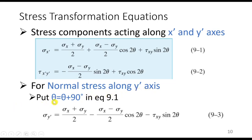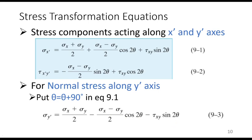For the normal stress along the y' axis, sigma_y', we simply substitute theta with (theta + 90°) in equation 9.1. This makes the angle 2theta + 180°, and since cos(180° + 2theta) equals negative cos 2theta and sin(180° + 2theta) equals negative sin 2theta, after mathematical manipulation we get sigma_y' equals (sigma_x + sigma_y)/2 minus (sigma_x minus sigma_y)/2 times cos 2theta minus tau_xy times sin 2theta.